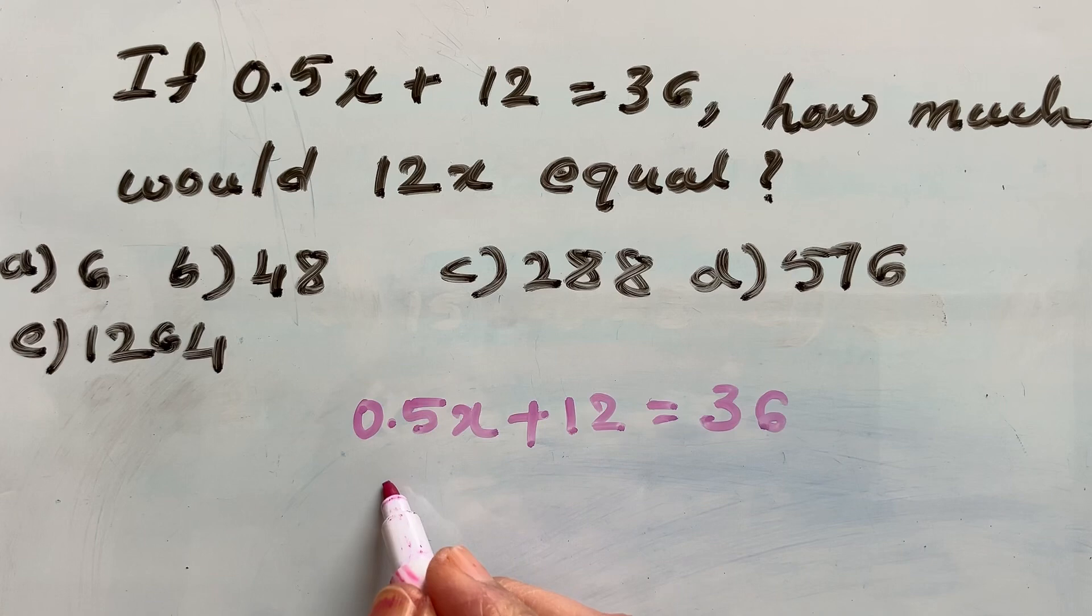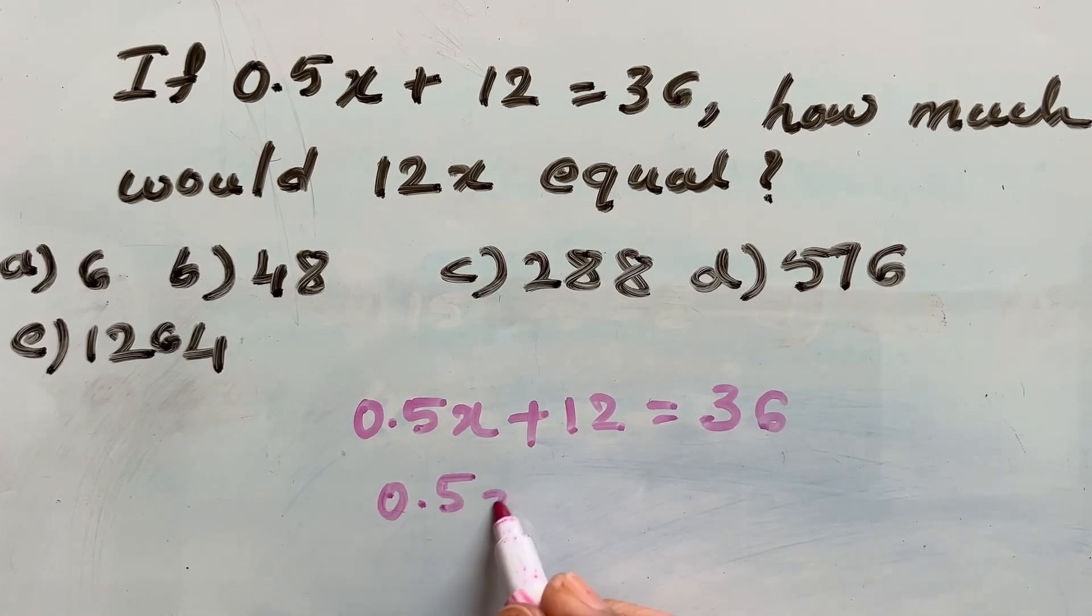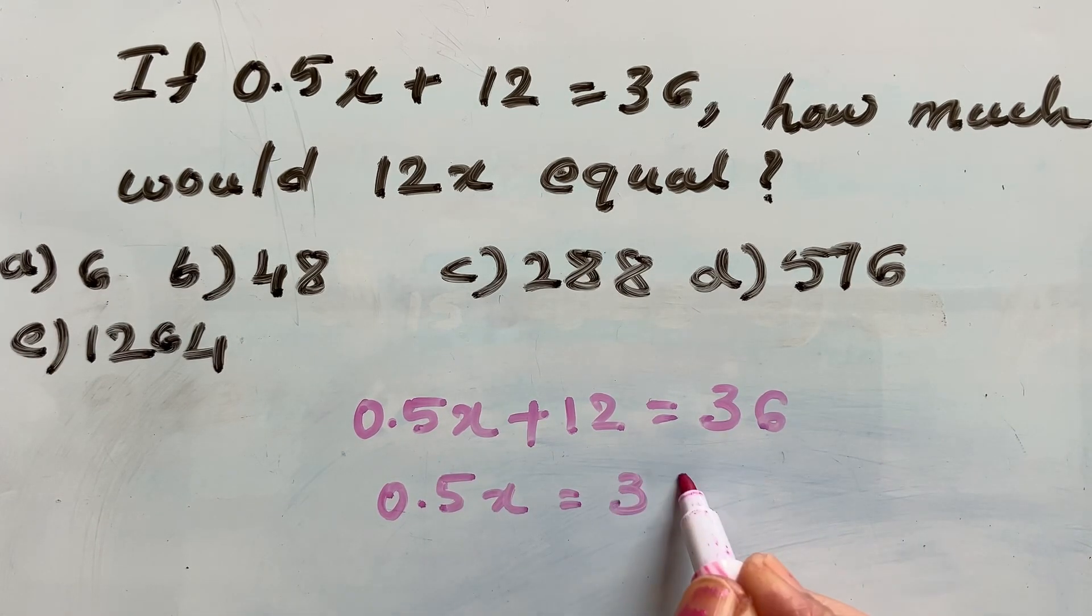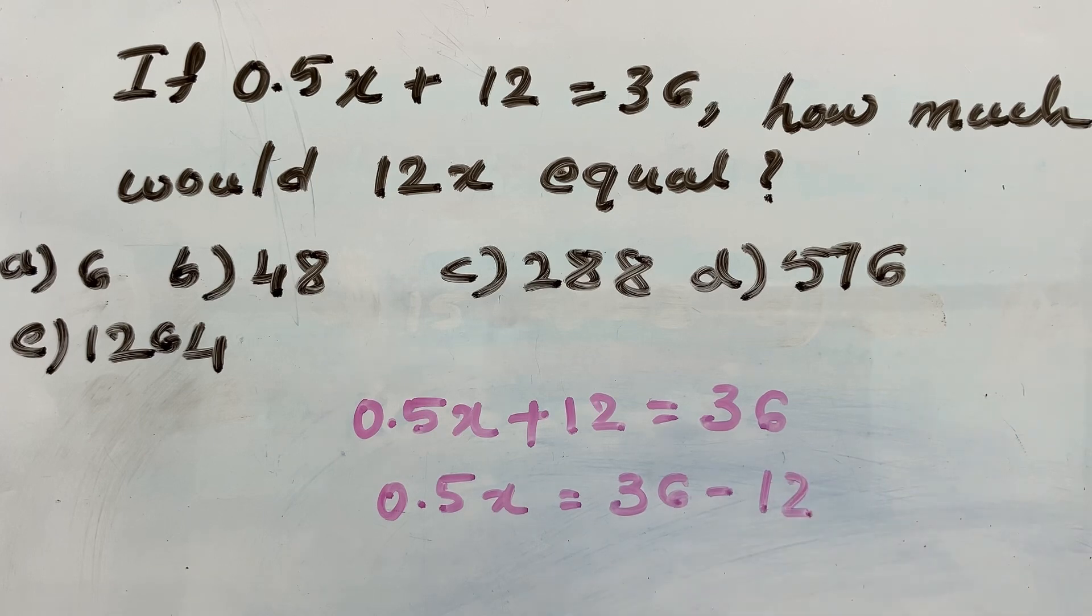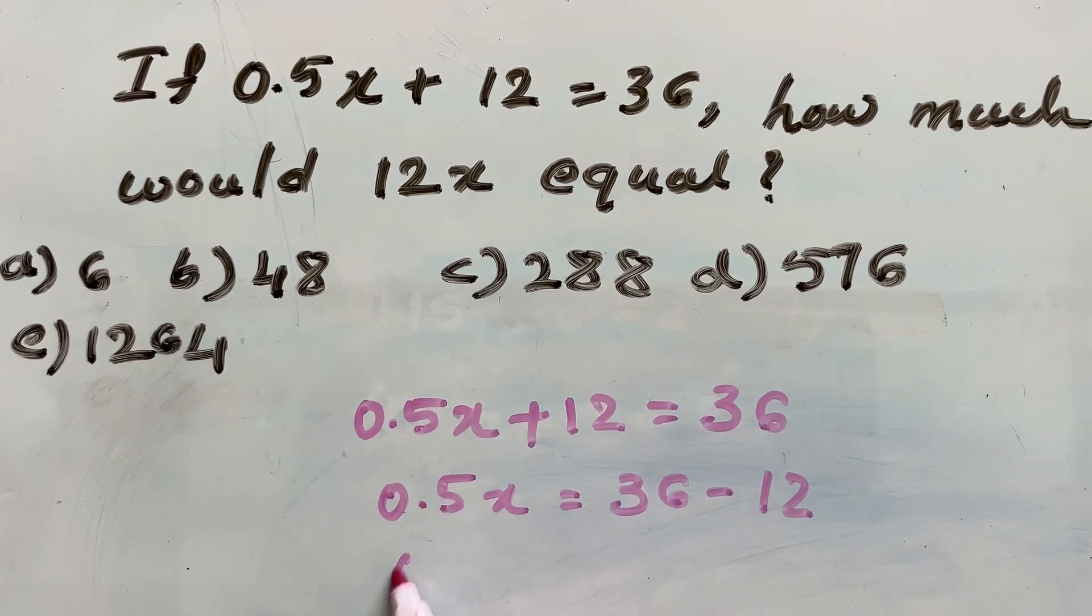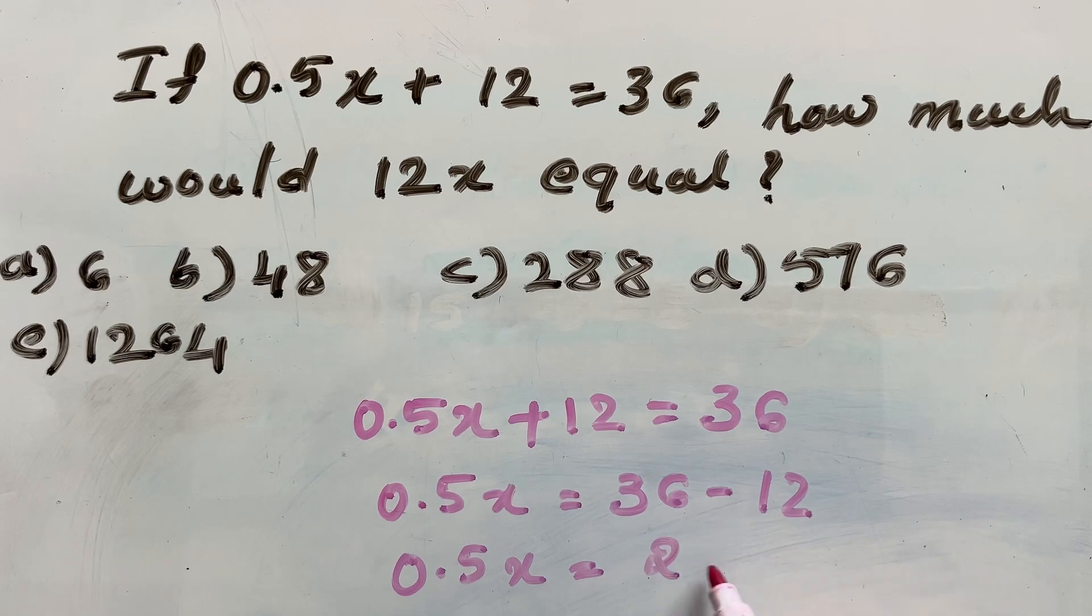Let's rearrange this equation. 0.5x is equal to 36 minus 12. 0.5x is equal to 24.